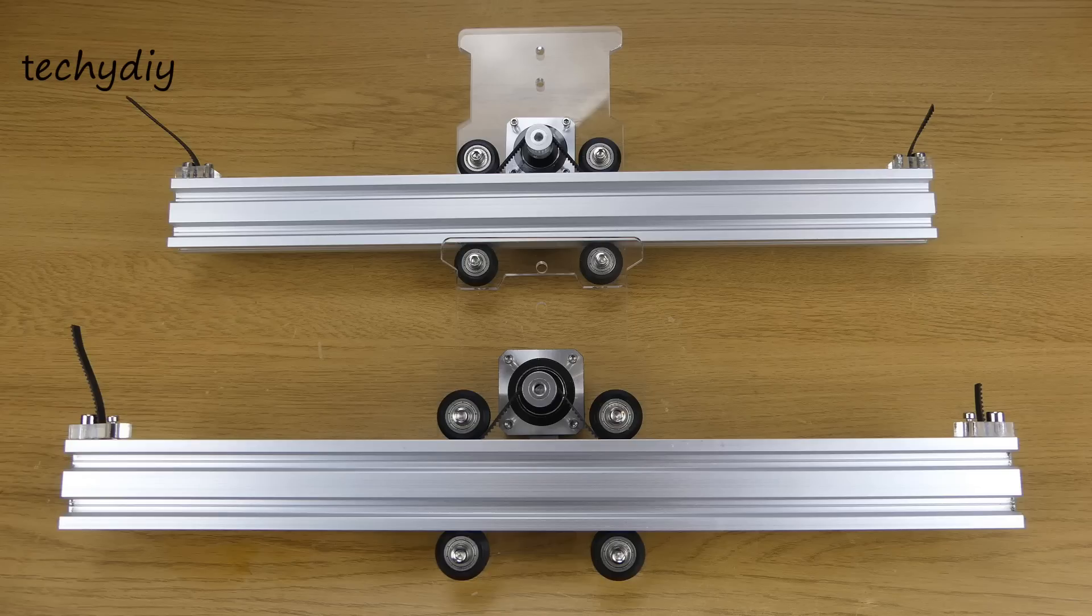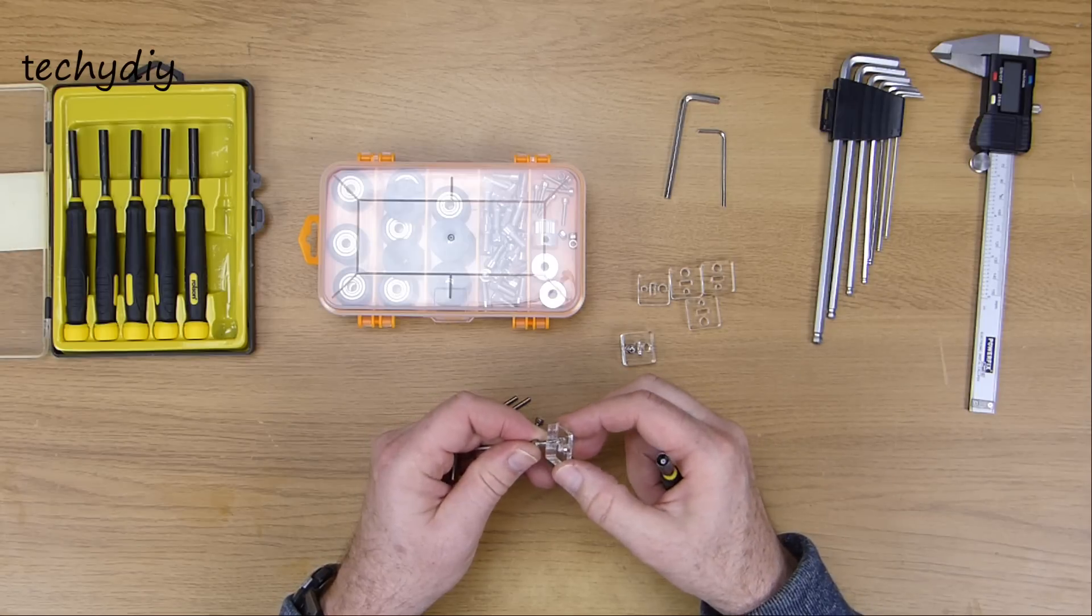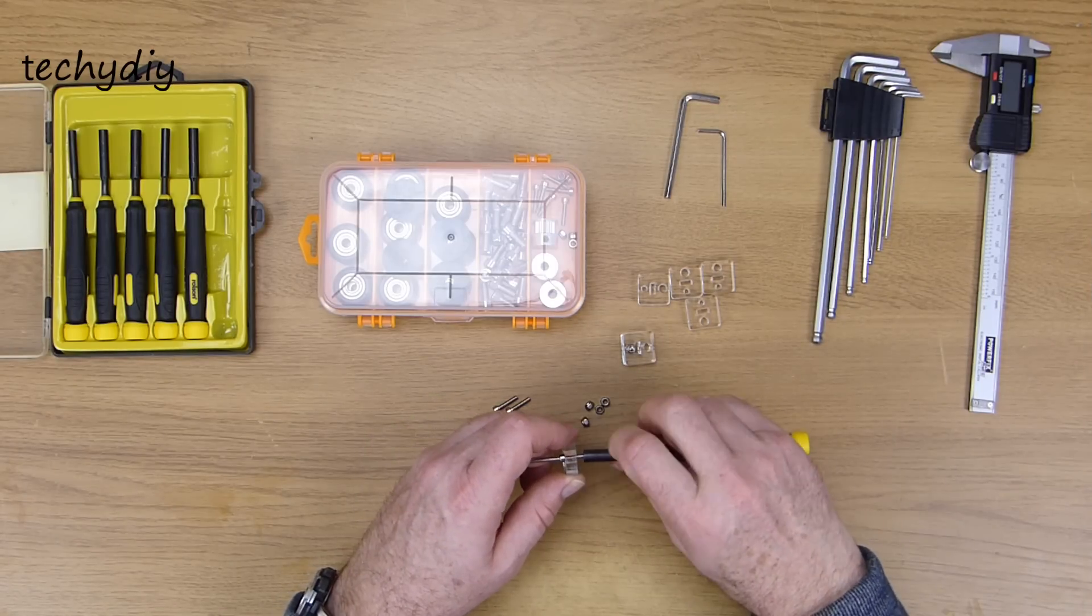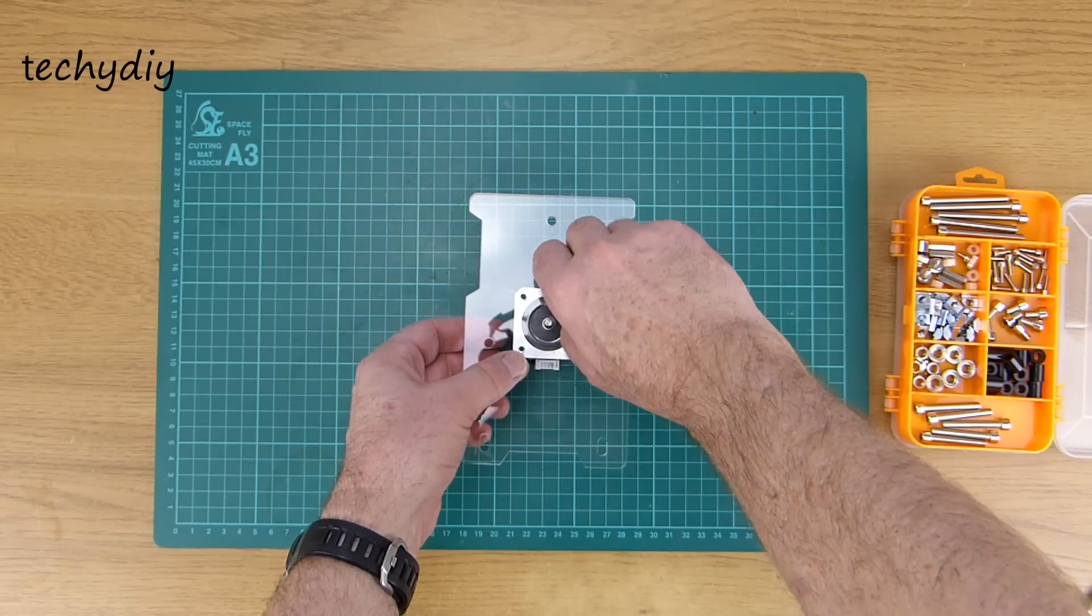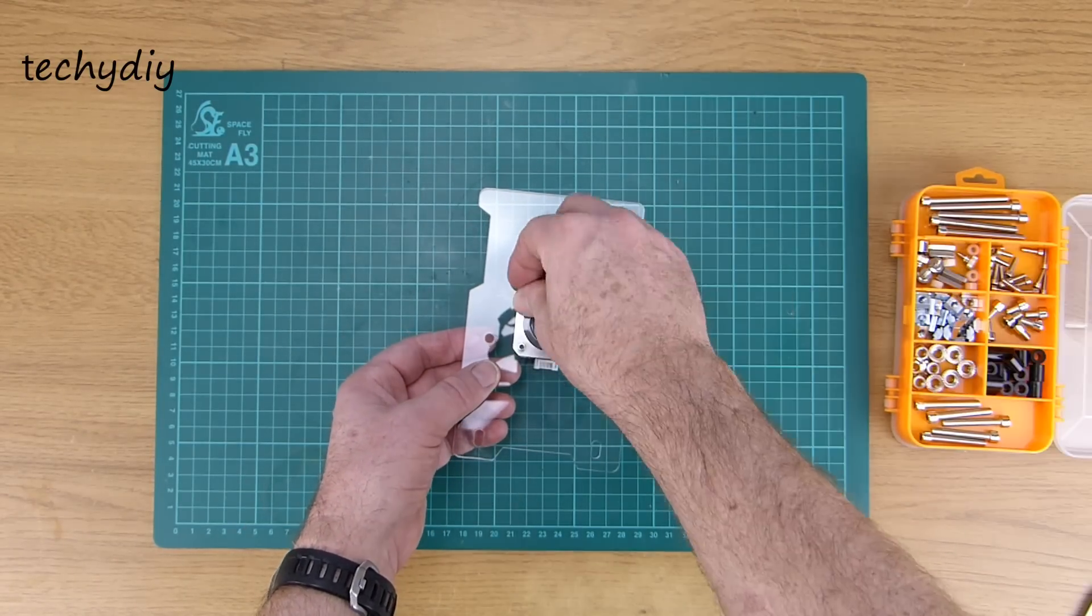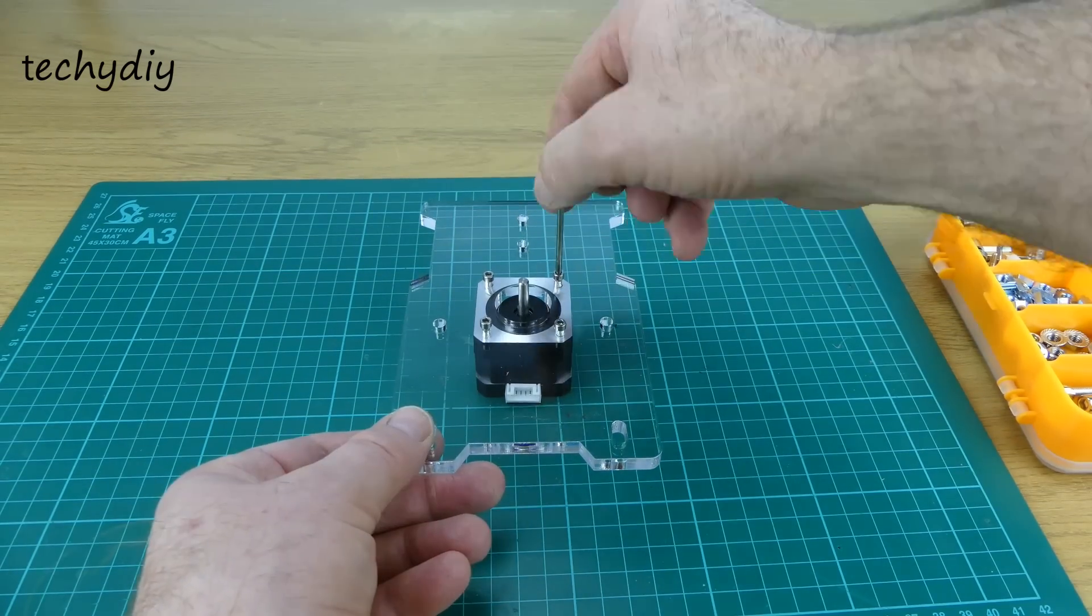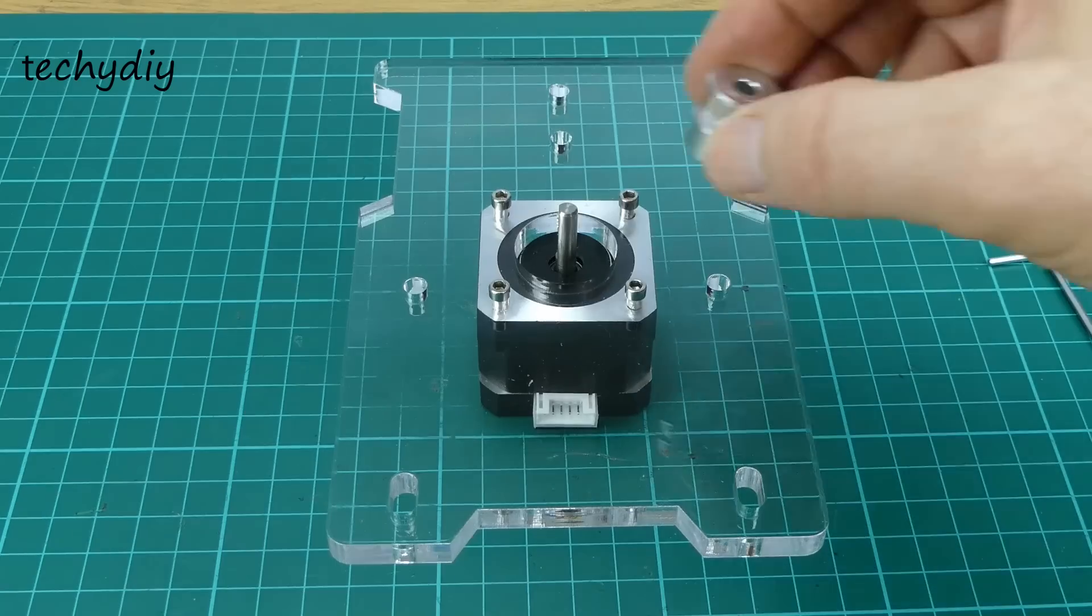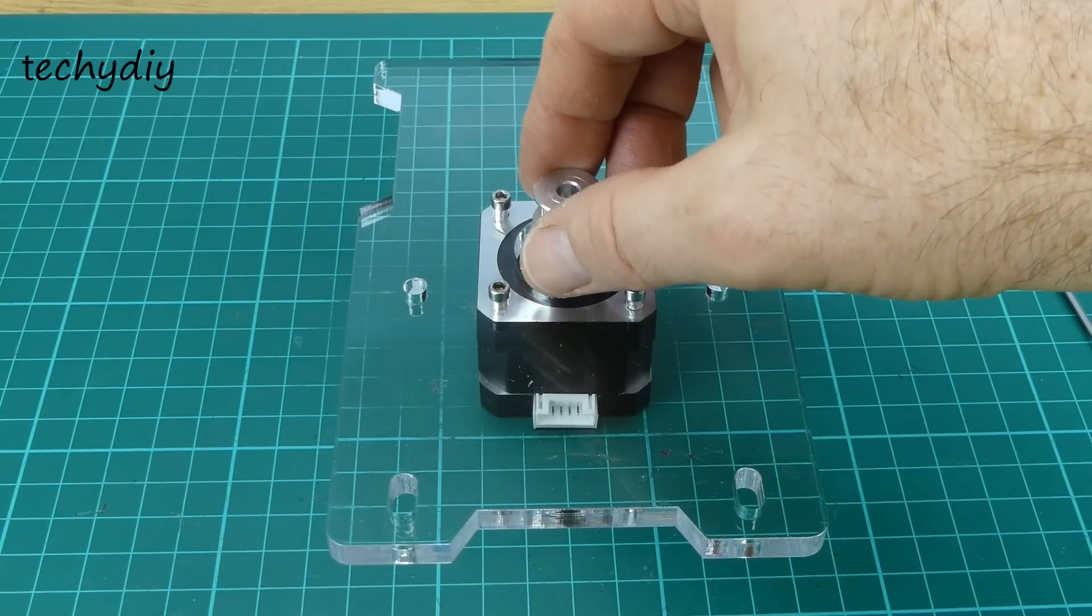To start with I built the two sides that form the Y axis. The belt tensioners were screwed together. A stepper motor was screwed onto one of the mounting plates. The pulley was placed onto the stepper motor drive shaft and secured by tightening the allen screws.